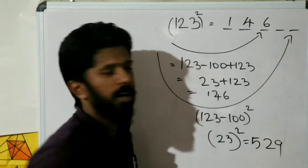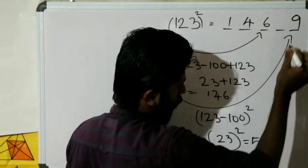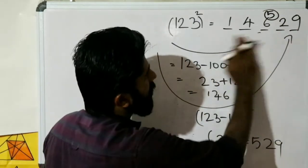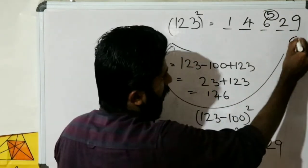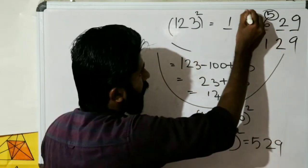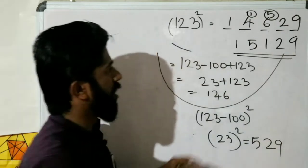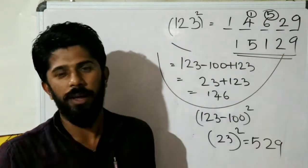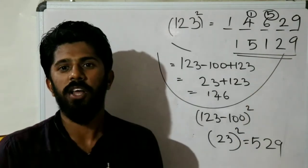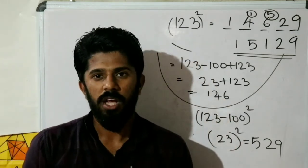For 123 whole square: 123 minus 100 is 23. 23 whole square is 529. Then 123 minus 100 plus 123 equals 146. So the answer is 146 with 529 appended — giving 15129.